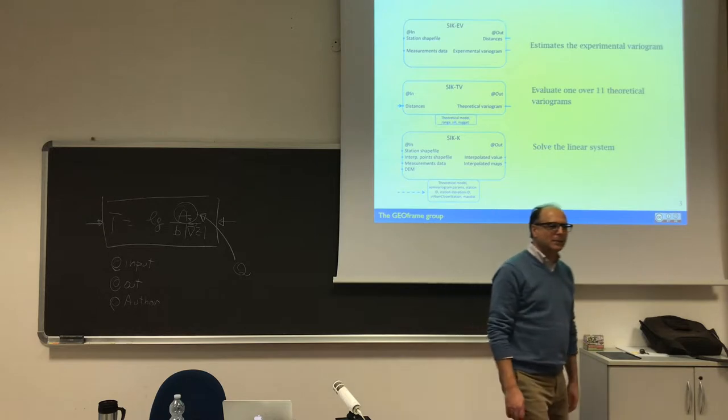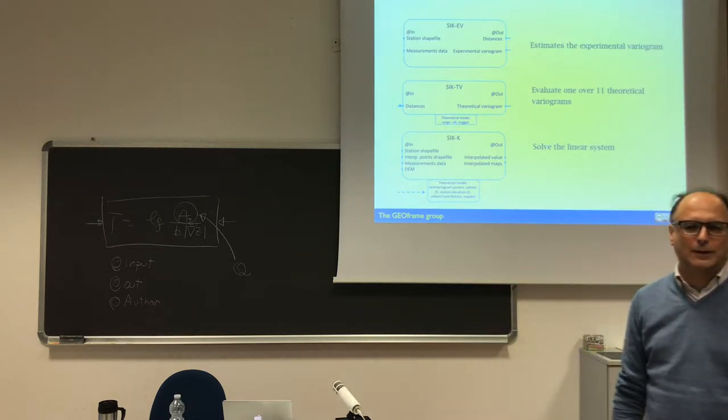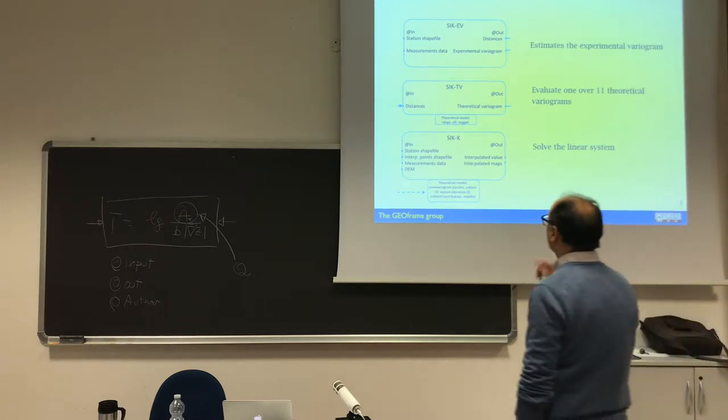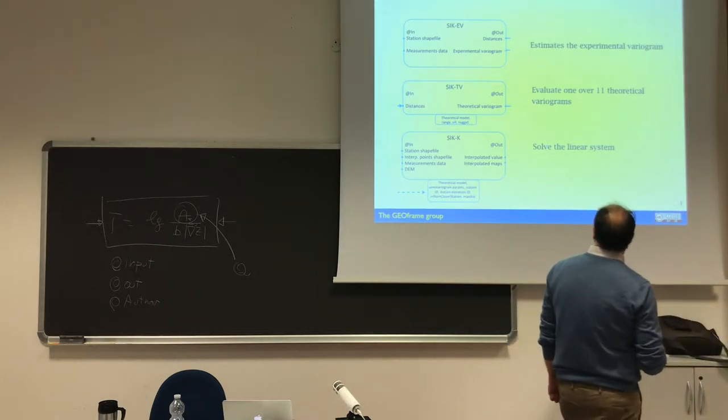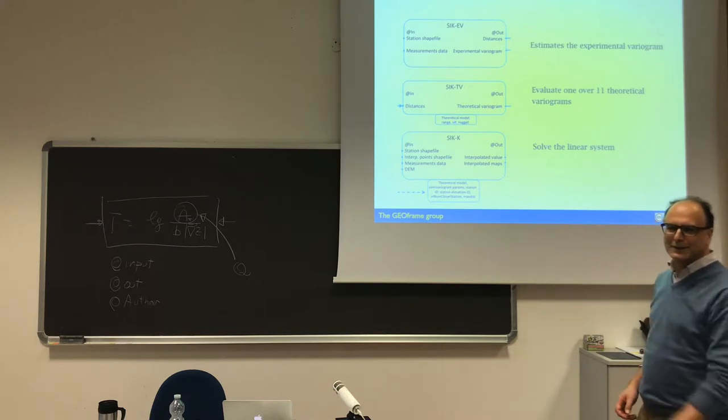This is the way we present, usually, one of the ways we present components. So our package has actually four components, but the main three components are those ones. We have SICK, this does the job to estimate the experimental variogram. You see what is in input and what is in output.